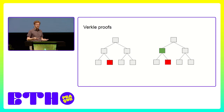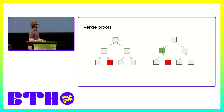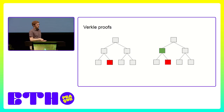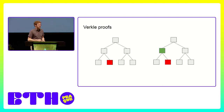What Verkle trees do is replace hashes with what's called vector commitments — that's the V in Verkle. The technology of vector commitments allows you to just pass the information along the path; it gives you a way to prove that a value is verified by the root without passing the siblings. So the proof becomes much much smaller, and this is why we're trying to switch to this technology.